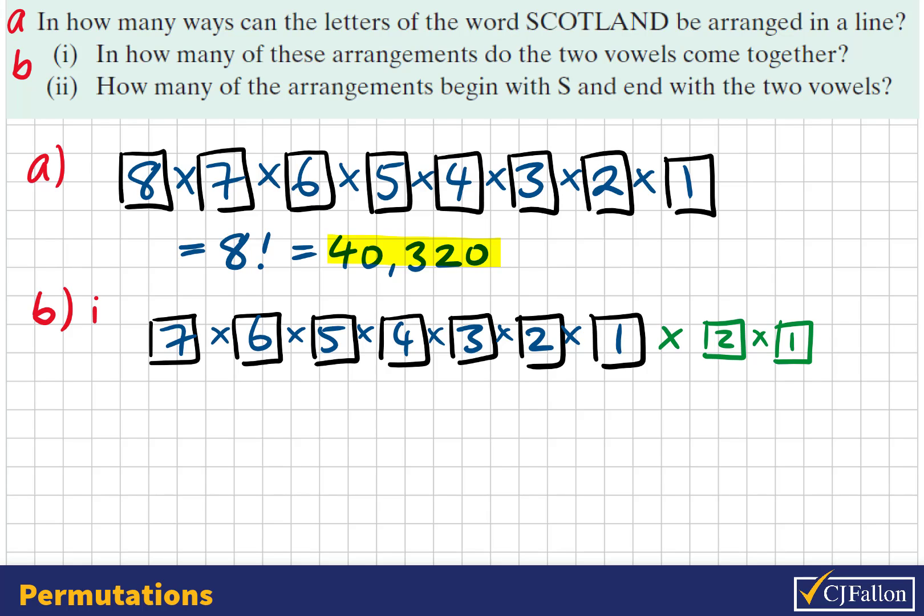So the solution to this question is 7 factorial multiplied by 2 factorial, or 7 factorial multiplied by 2. So again, we take out the calculator. And the solution to this is 10,080.